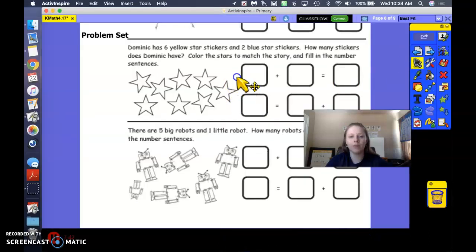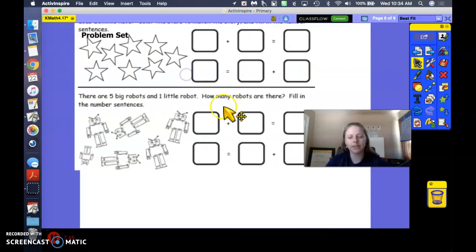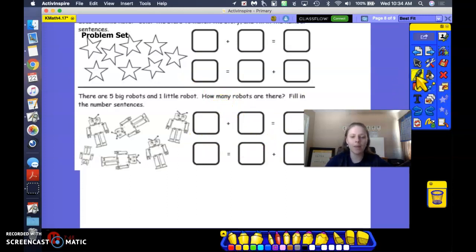Let's go ahead and do just the robot one to practice writing our sentence forward and backwards. So, how many small robots do we have? 1. How many big robots do we have? 5. How many do we have all together? 6. Great job. Now we're going to reverse that sentence. Here we notice that we've got the whole over here with our equal sign. It's all by itself, so we're going to flip this number sentence to write it another way. 6 is the same as 1 and 5. Great job, friends.